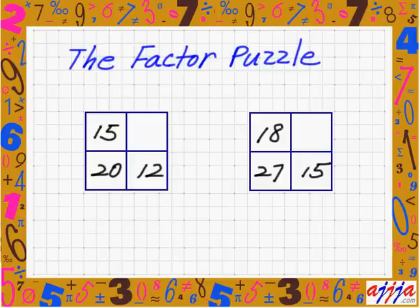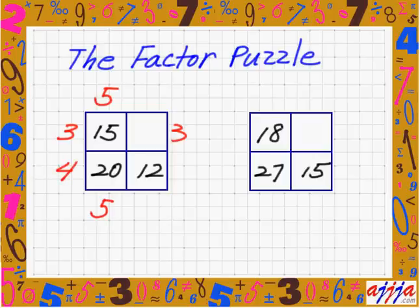A couple more right here. So 15 and 20 — must be 5, right? 5 there and 5 there. 5 times what is 15? 3 and 3. Now, 5 times what is 20? 4. Then must be 4 right there. Automatically, 4 times 3 is 12. So 3 must be right there. So, 9. Very interesting.